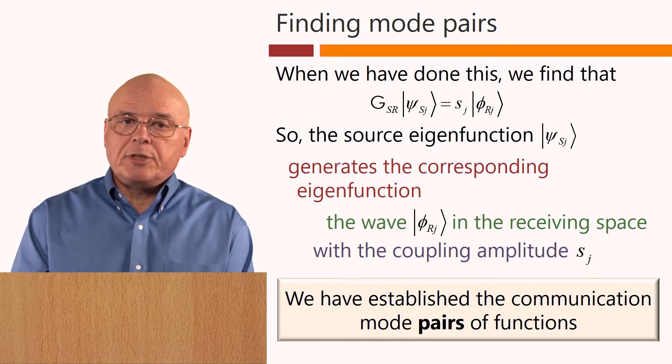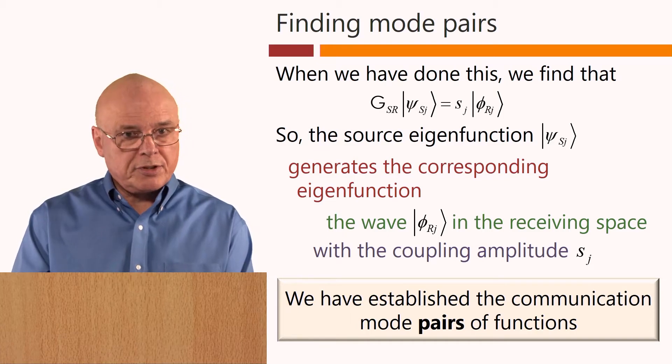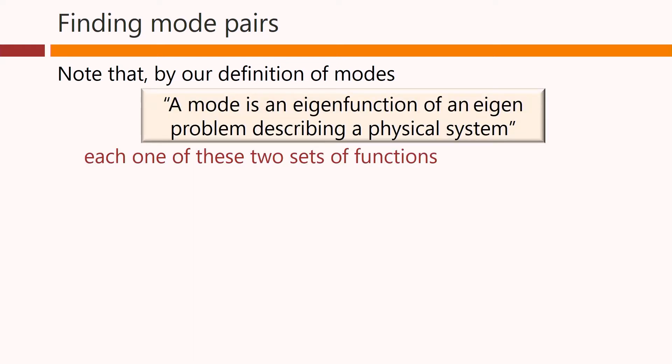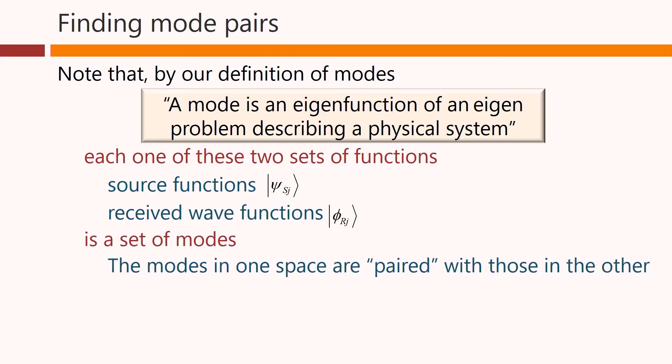Therefore, we have established the communication mode pairs of functions. Note that, by our definition of modes that we gave earlier on, each one of these two sets of functions, the source functions ψ_sj and the received wave functions φ_rj, is a set of modes. The modes in one space are paired with those in the other.